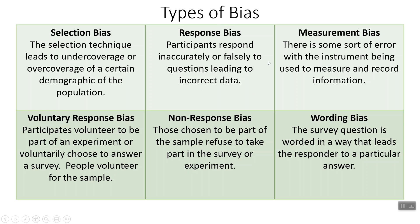Next up is response bias. This one could be the fault of the participants filling out the survey, or it could be the result of writing things poorly. Participants respond inaccurately or falsely to questions, leading to inaccurate data. Maybe they didn't understand the question and answered it wrong, or maybe they just lied because they didn't want to share some information — they thought it was too private.